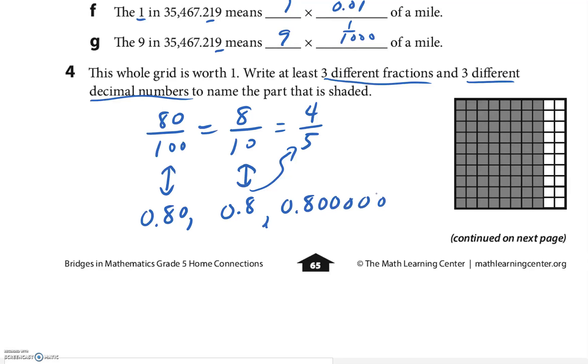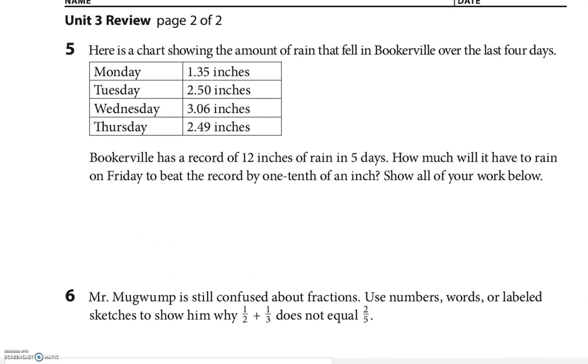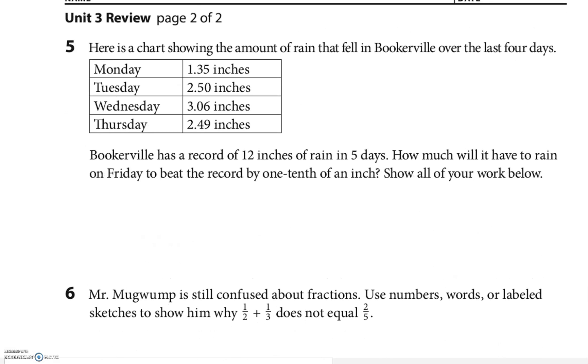Next page, I like this one. Here's a chart showing the amount of rain that fell in Brookville over the last four days. They have a record of 12 inches in five days. How much will have to rain on Friday to beat the record by one tenth of an inch? The first thing I'm gonna do is add up all these: 1.35, 2.50, 3.06, 2.49.